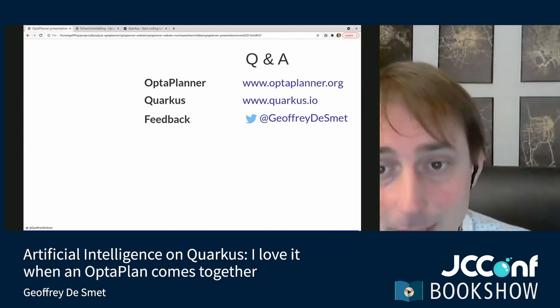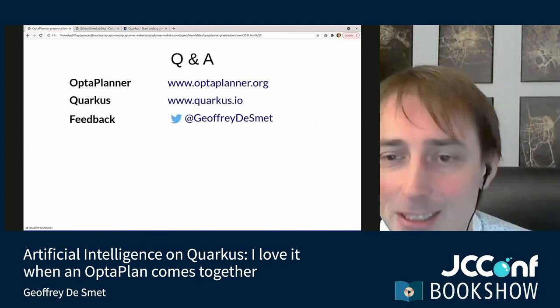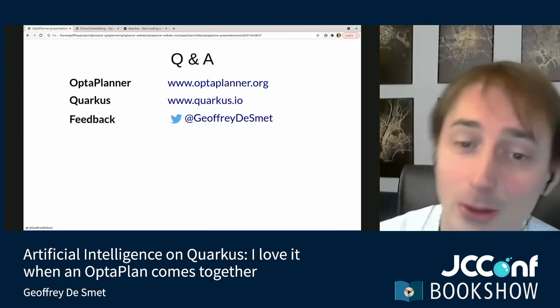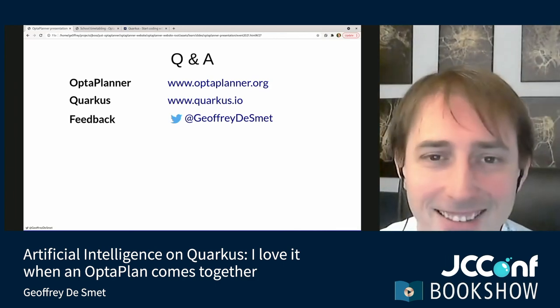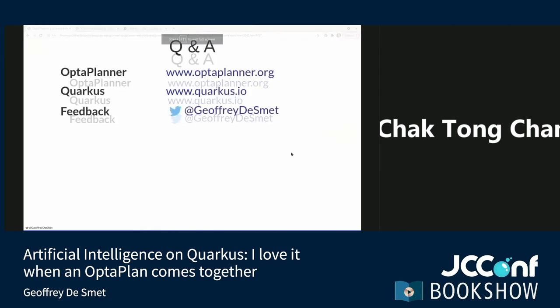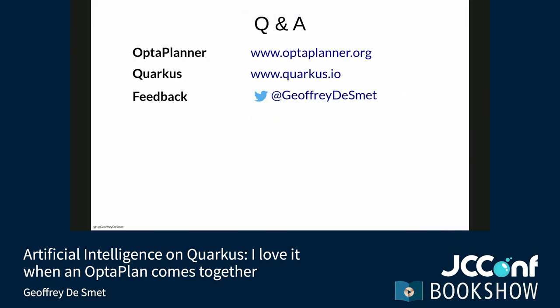That's my presentation. If there are any questions on optaplanner.org or AI constraint solving in general, I'm happy to answer them. You can get started by going to optaplanner.org to find the Quick Starts repository, cloning it, going into the school-timetabling case, running `mvn quarkus:dev`, going to localhost 8080, and starting to explore the code including those soft constraints.